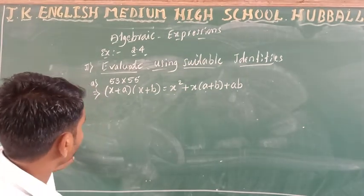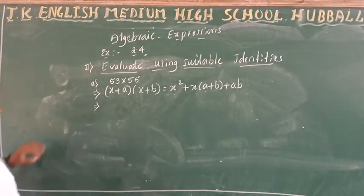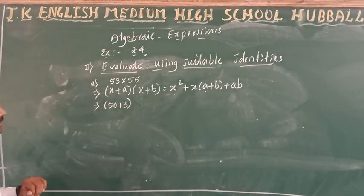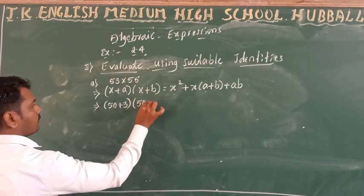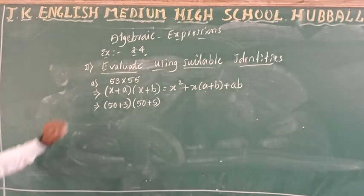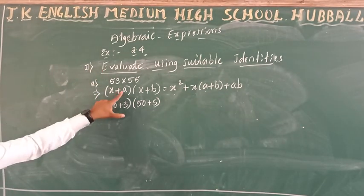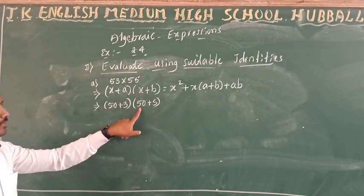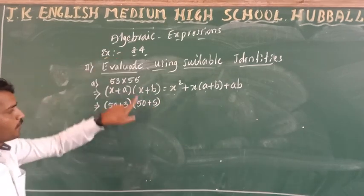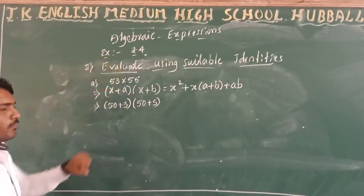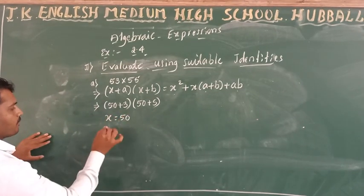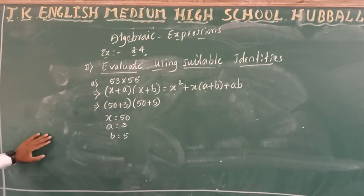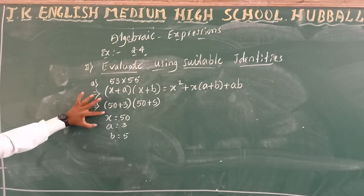How do we expand 53 and 55? Write 53 as (50 + 3) and 55 as (50 + 5). So here x equals 50, a equals 3, and b equals 5. Adding x and a gives 53, and adding x and b gives 55. We have extracted x, a, and b values.